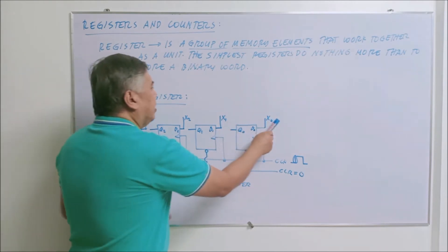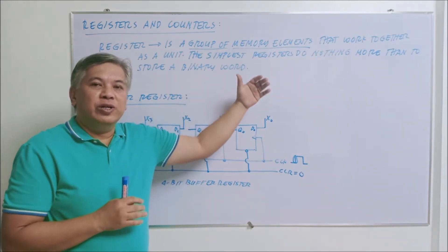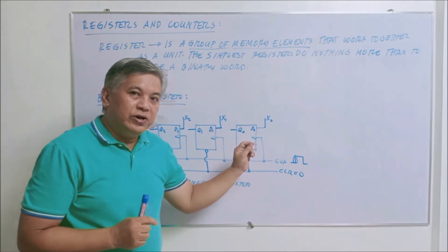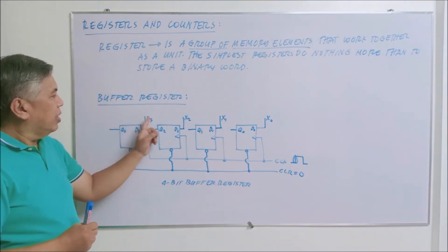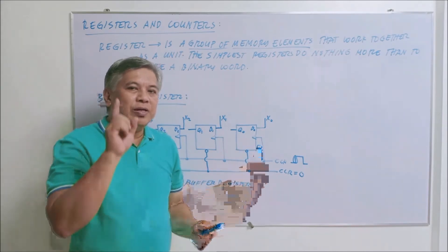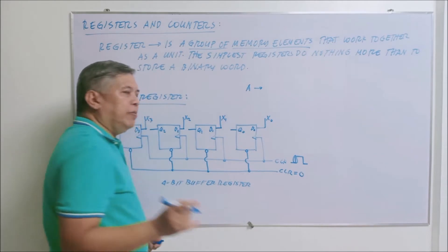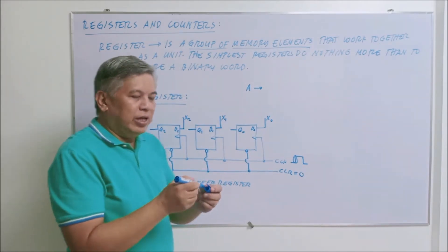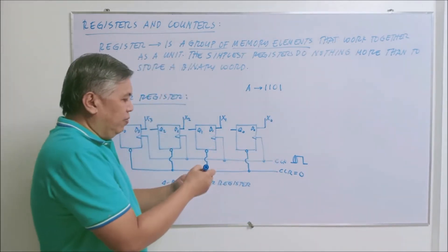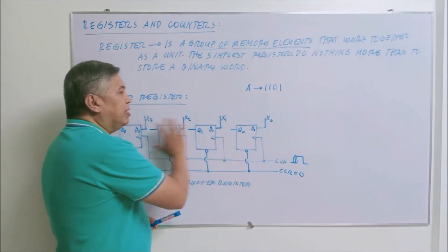Now, X3, X2, X1, and X0 are binary words which come from the outside world. This register can be located inside your computer or in your cell phone. So if you press the letter A on your keyboard, the ASCII code of A — ASCII means American Standard Code — for example, the ASCII code of A is 1101, when you press A, this 1101 will be transmitted inside your computer and received by your X inputs.